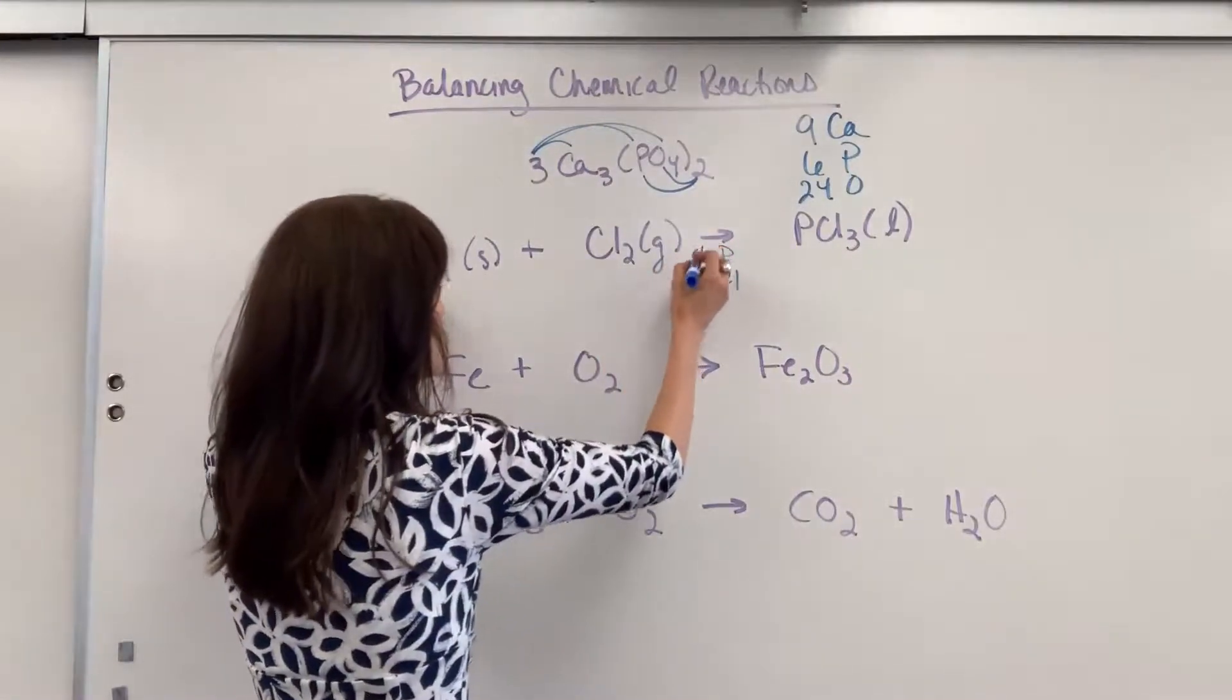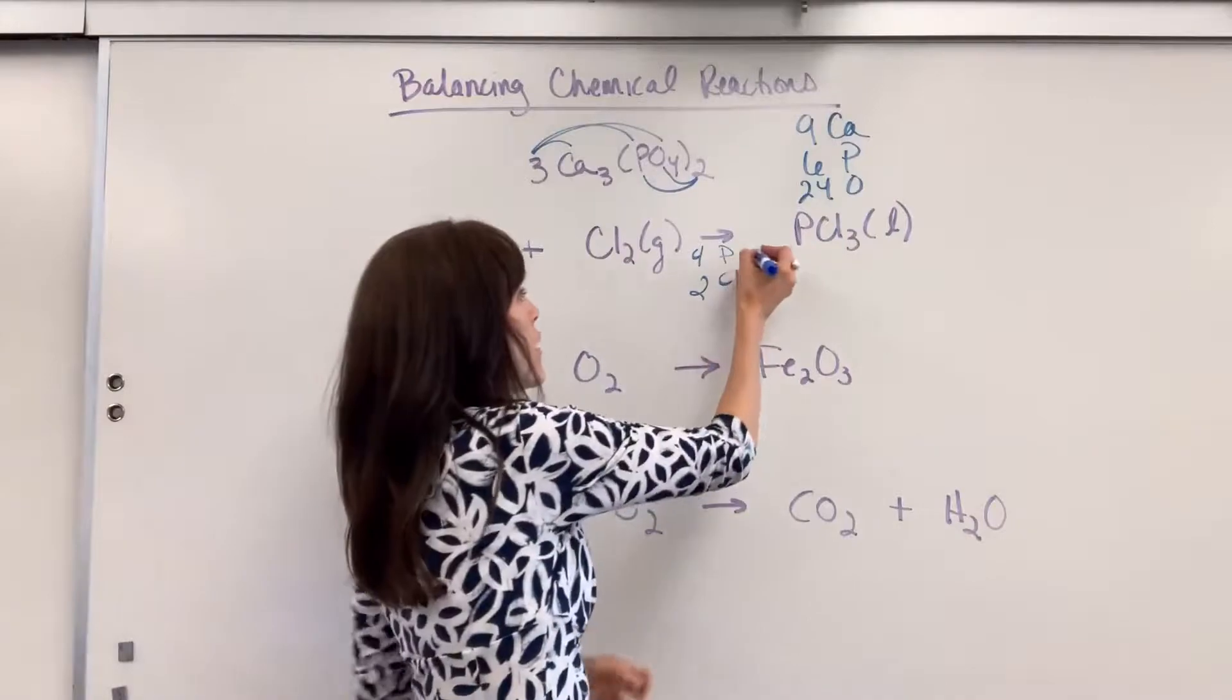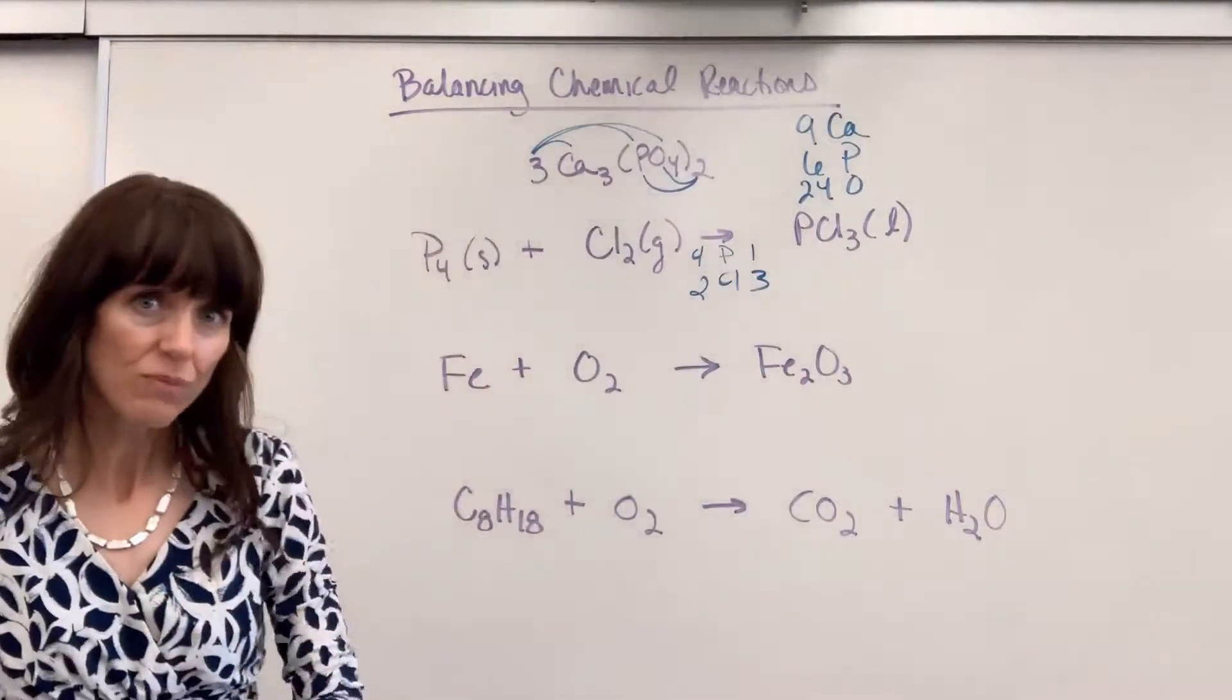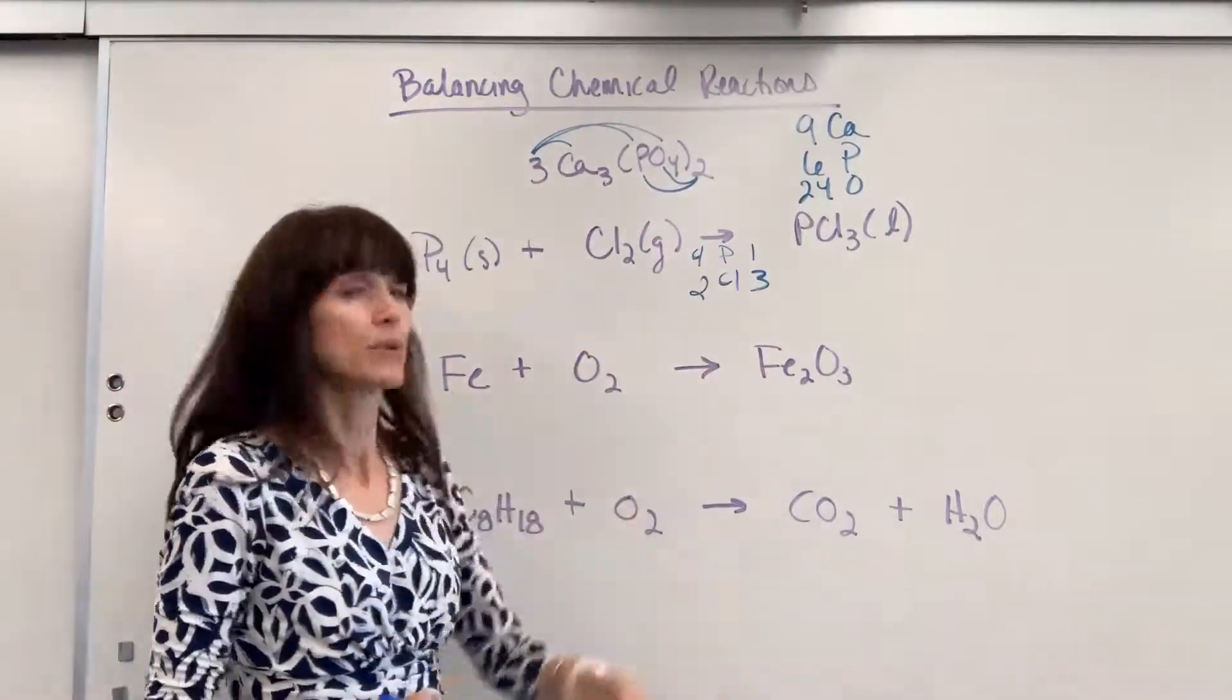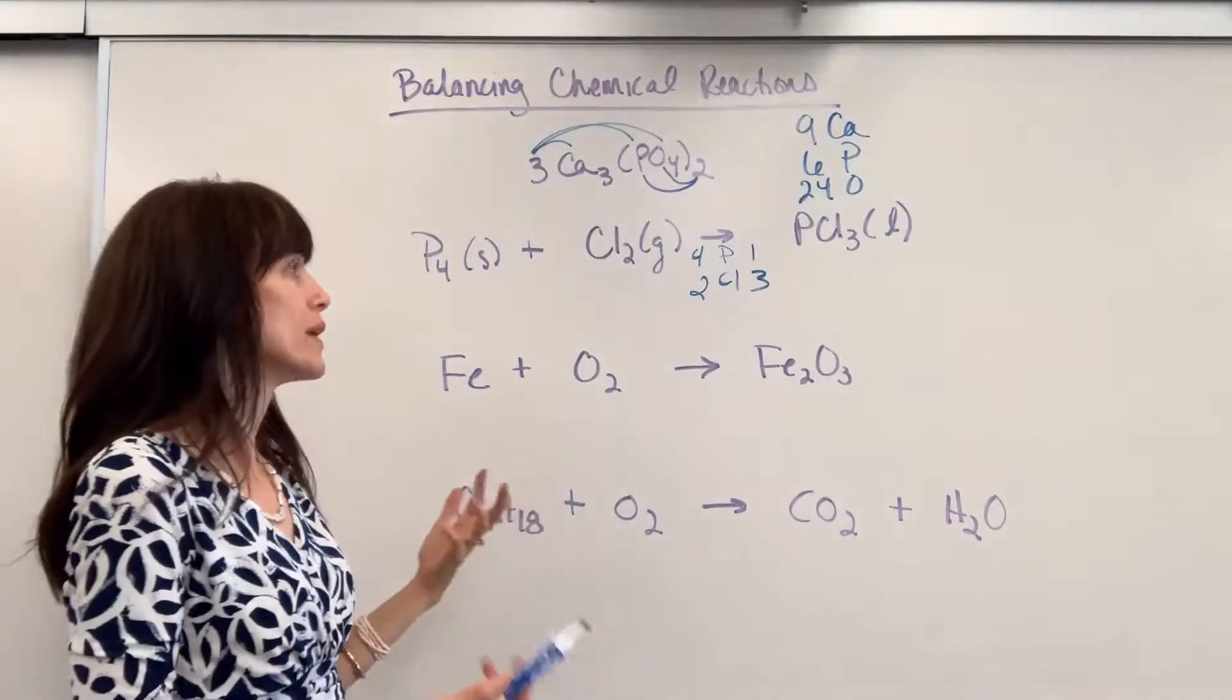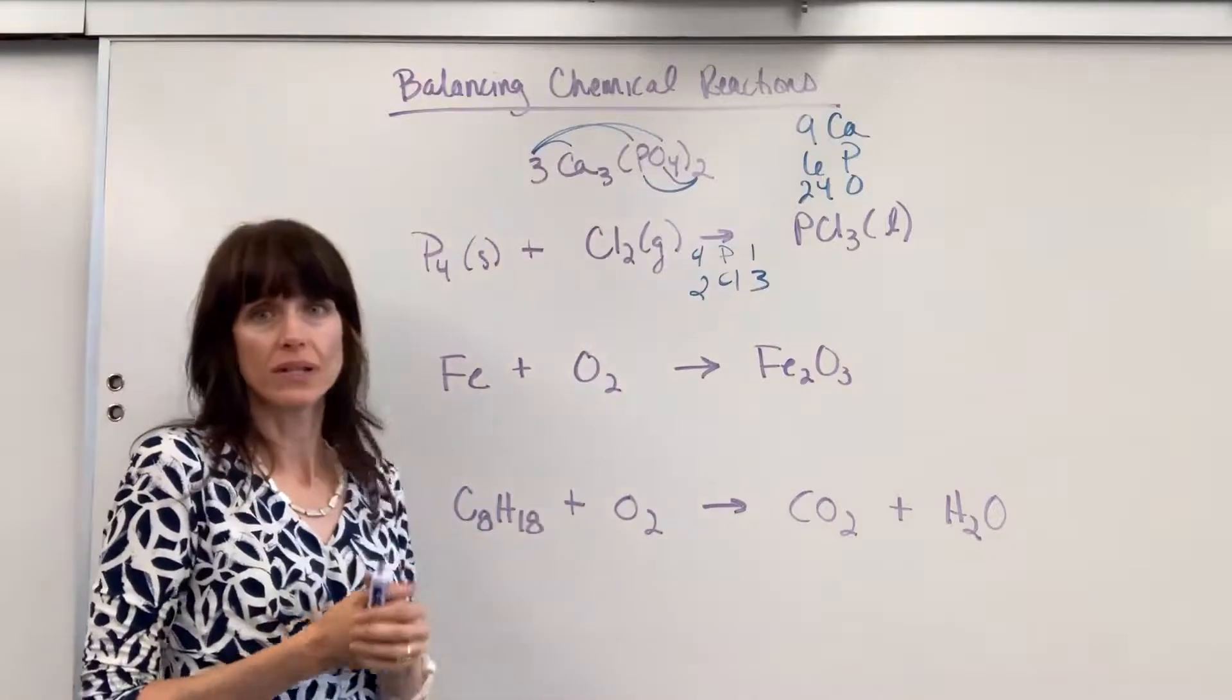I have four phosphorus, two chlorine on the reactant side. On the product side, I've got one phosphorus and three chlorine. Now here's the deal. You can only use coefficients to change these numbers. And remember, coefficients multiply. So you're looking at what numbers we can multiply to get our atoms equal on each side.